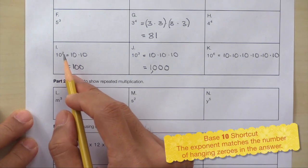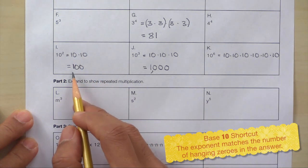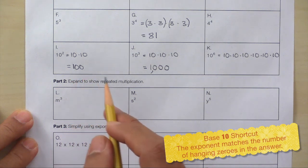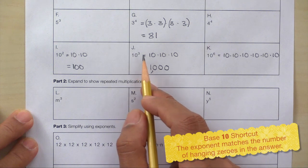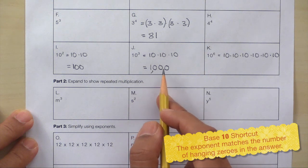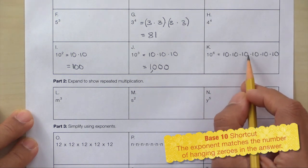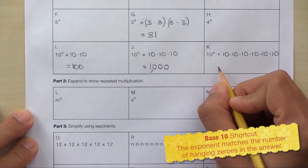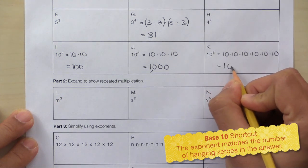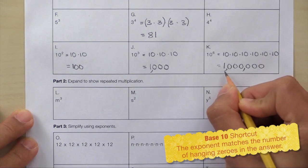Now let's look for a pattern to help us with box K. Take a look at 10 to the second power — notice that we have two zeros, and in our final answer we have a one followed by two zeros. Here we have 10 to the third power — notice three zeros, and our final answer has a one followed by three zeros. Now use that pattern in box K: here's 10 to the sixth power, so our final answer will have a one followed by six zeros. Our answer is one million.